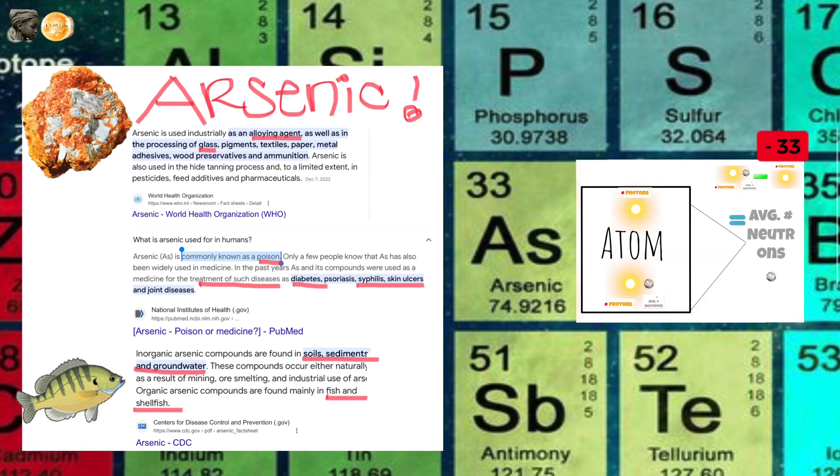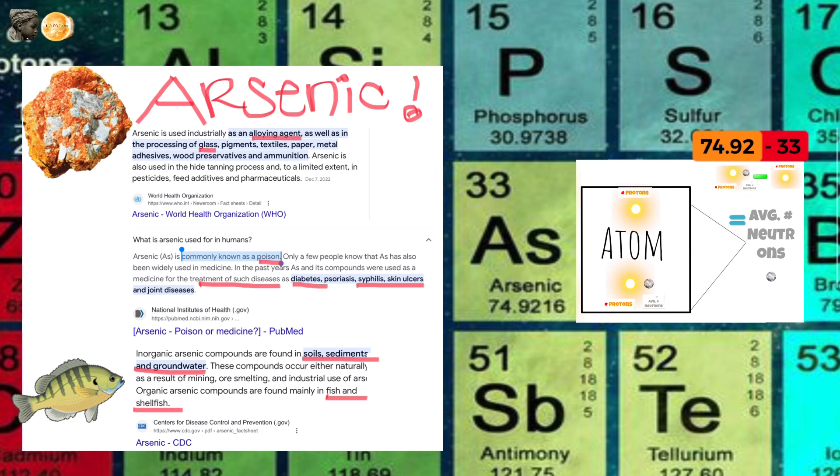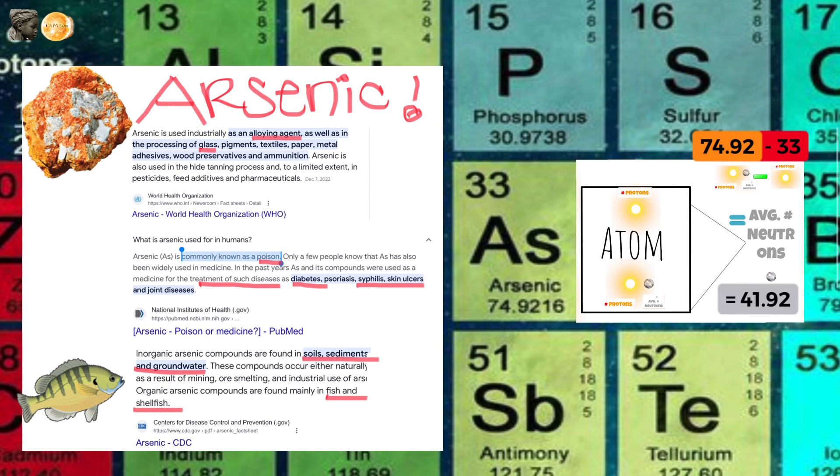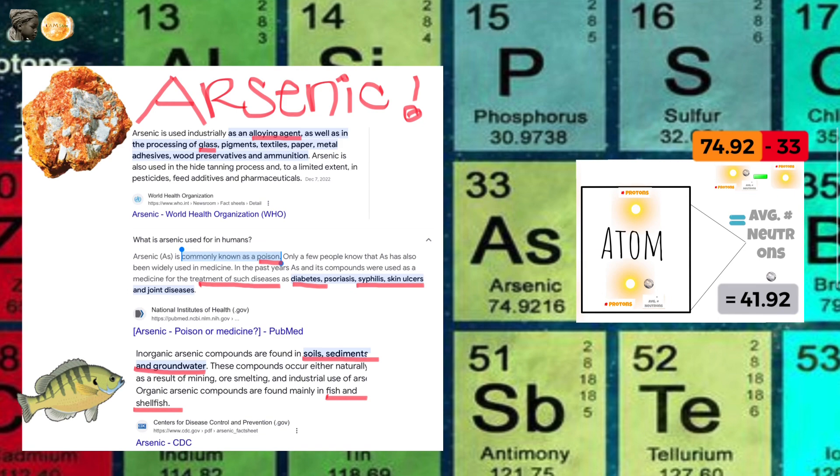So if I subtract 33 from 74.92, I'll get the average number of neutrons found in arsenic atoms. 41.92 neutrons. Way more neutrons than protons, am I right?